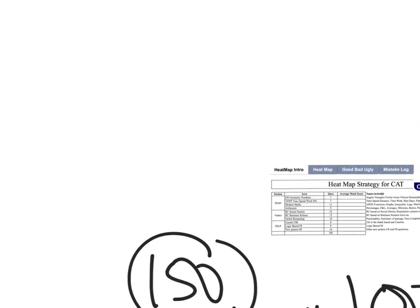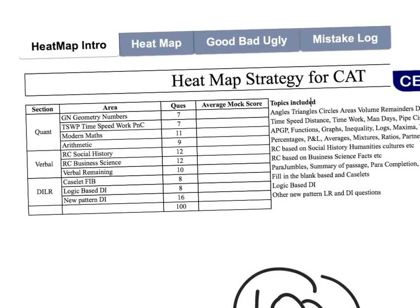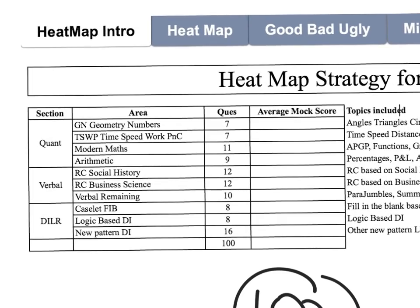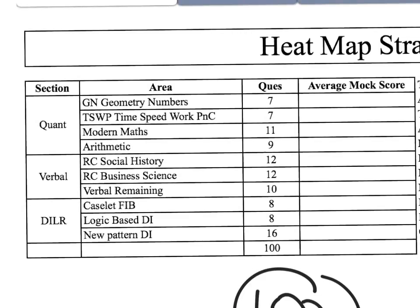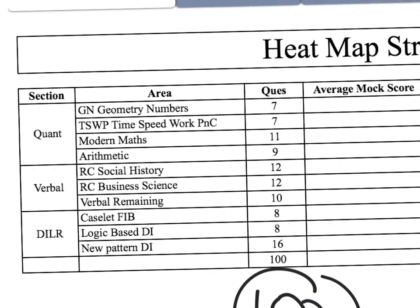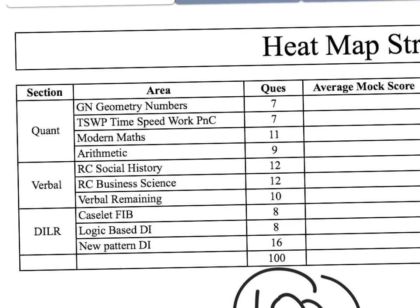So how to do that? The first step is the heat map. I don't want to know about what your 100 marks are in total — I want to know the break-up of those 100 marks. I have divided the CAT into 10 parts, so I want you to note down the break-up of your 100 marks. For example, Numbers and Geometry is one section.